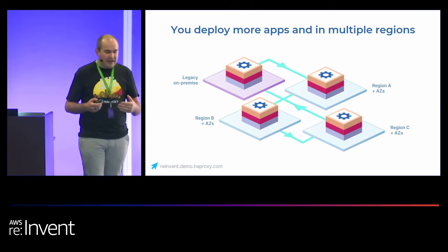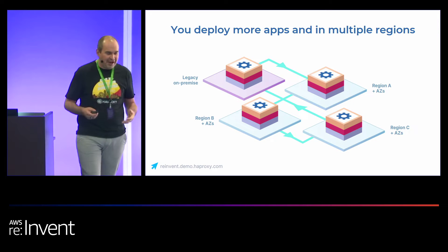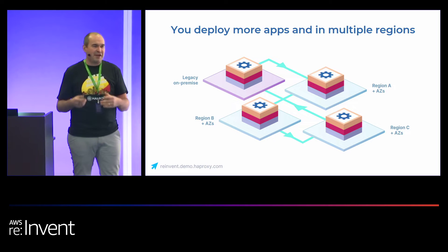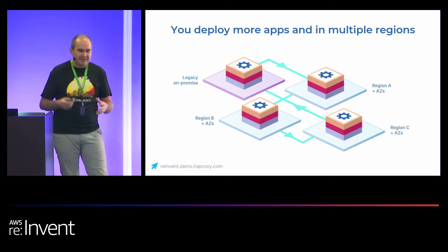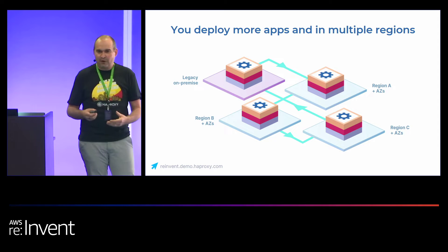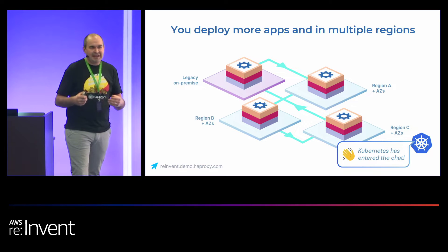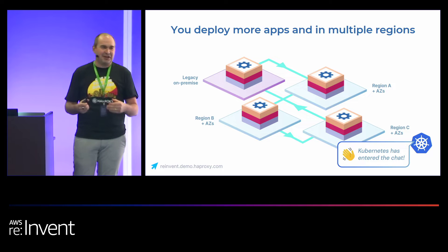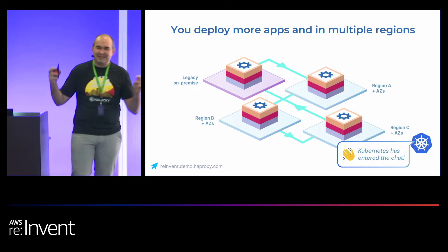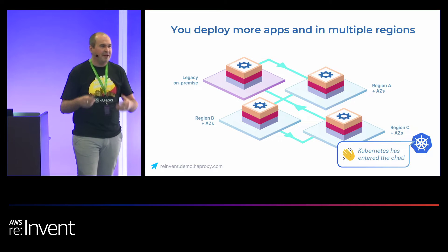Then you suddenly wake up and now you have more and more apps in multiple regions in AWS, moving traffic between regions, but you also have on-premise legacy data centers. You deploy more and more apps, you become successful, and you have more stuff. And just like a new manager who joins a company and suddenly gets added to your Slack — suddenly Kubernetes entered the chat. Now not only do you have a lot of regions with applications, but then you have Kubernetes.